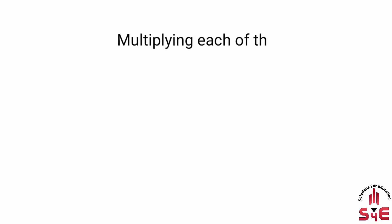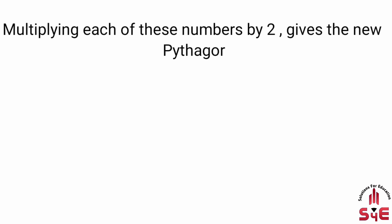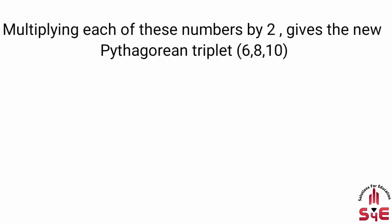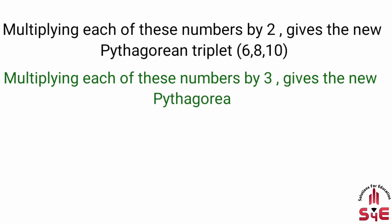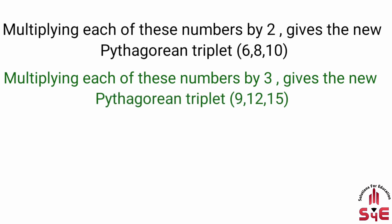Multiplying each of these numbers by 2 gives the new Pythagorean triplet 6, 8, 10. अगर हम 3, 4, 5 को 2 से multiply करते हैं, तो नया Pythagorean triplet 6, 8, 10 होता है। Similarly, multiplying each by 3 gives the new Pythagorean triplet 9, 12, 15. इसी तरह 3, 4, 5 को 3 से multiply करने पर नया Pythagorean triplet 9, 12, 15 मिलता है।